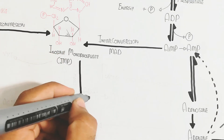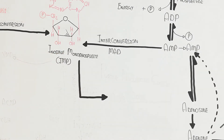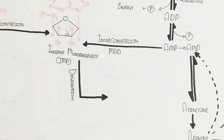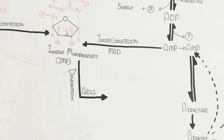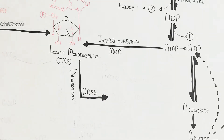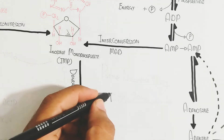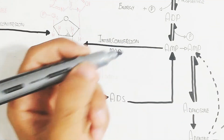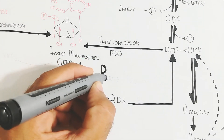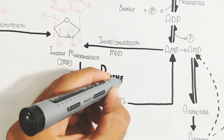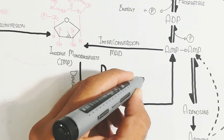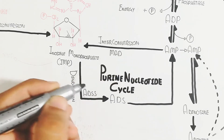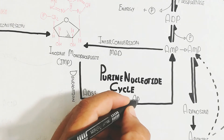The purine nucleotide cycle involves adenine synthase enzyme producing adenine from IMP, and then adenylosuccinate lyase (ADS lyase) enzyme regenerating AMP (adenosine monophosphate). Purines have a double-ring structure. This cycle is important for purine interconversion.